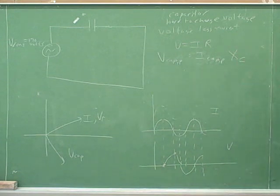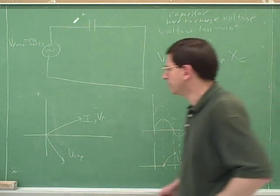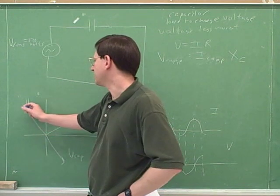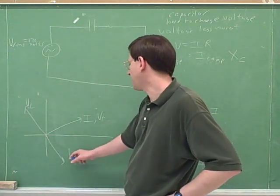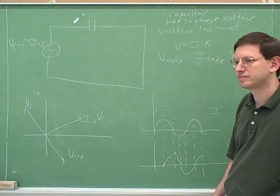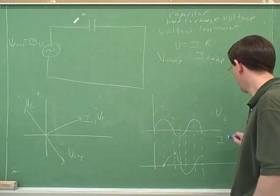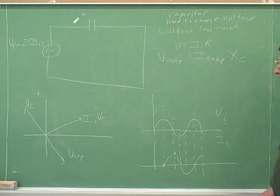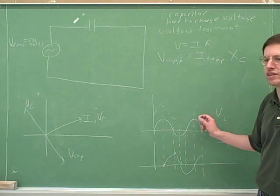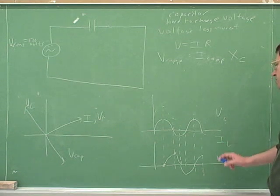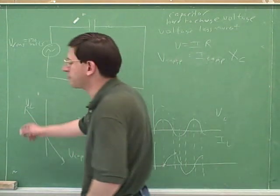Now, how about for an inductor? For an inductor, is it hard to change the voltage or is it hard to change the current? The current — it's hard to change the current. So who should lag, the current or the voltage? The current should lag. That means the voltage should be ahead, so in a phasor diagram the voltage should be leading the current. The voltage in the inductor is a quarter cycle ahead of the current, just like the voltage in the capacitor is a quarter cycle behind the current. We can use the same graphs, but now we say that the current is behind the voltage in the inductor — the current in the inductor is a quarter cycle behind the voltage in the inductor. That's what this phasor diagram indicates.